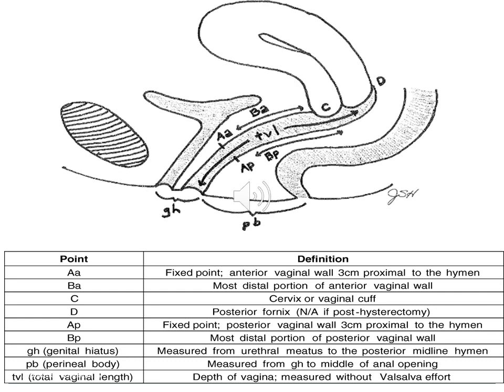Looking more in depth at these points: point Aa in the anterior wall is a fixed point three centimeters proximal to the hymen, corresponding approximately to the urethrovesical junction. It can range from minus three, its normal position, to plus three, representing complete eversion. Point Ba is the most distal portion of the anterior vaginal wall; if there is no prolapse, Ba is minus three by definition, but it can have a positive value in cases of total prolapse, potentially exceeding plus three. Point C is the cervix or vaginal cuff post-hysterectomy. Point D is the posterior fornix, measured only in women with a cervix. Point Ap is a fixed point on the posterior vaginal wall three centimeters proximal to the hymen, ranging from minus three to plus three. Point Bp is the most distal portion of the posterior vaginal wall.